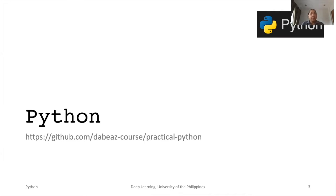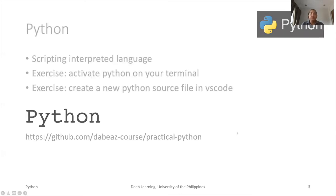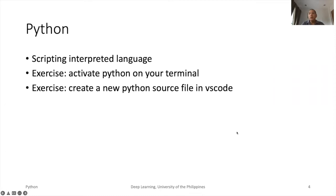For deployment, Python may not be the language of choice because of the overhead. Usually, trained models are converted to C or C++, or compiled to a more lightweight representation. Python was initially targeted for system administration because it is easy to use, and it became popular in the scientific community.